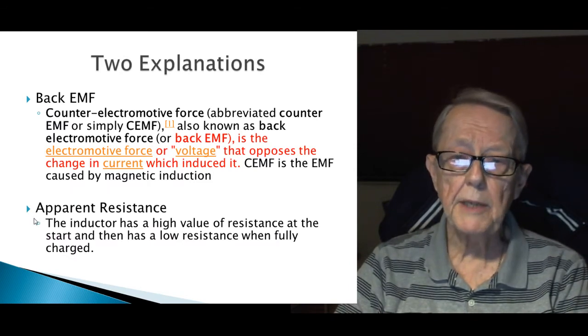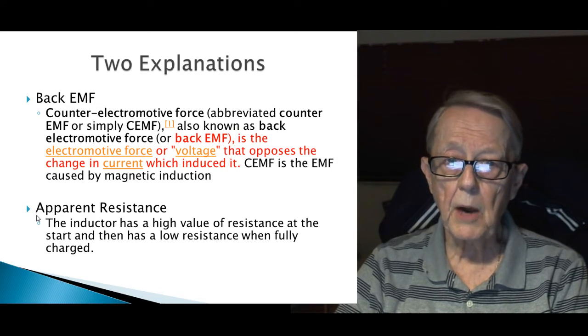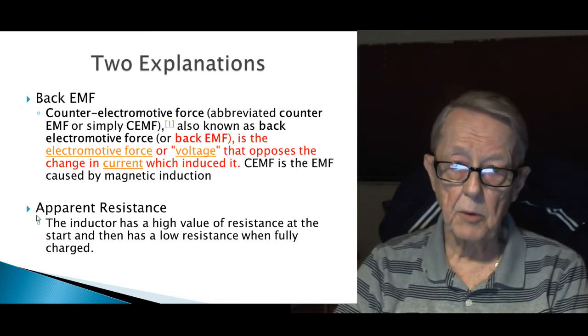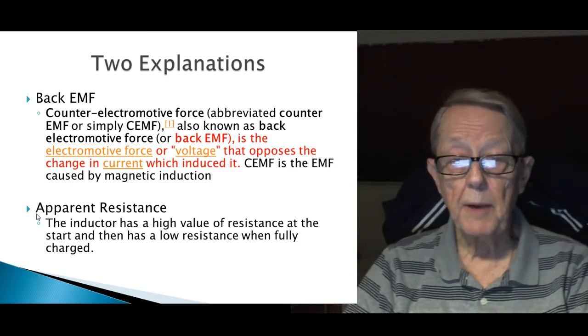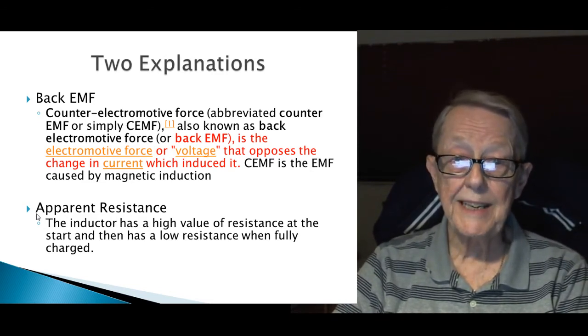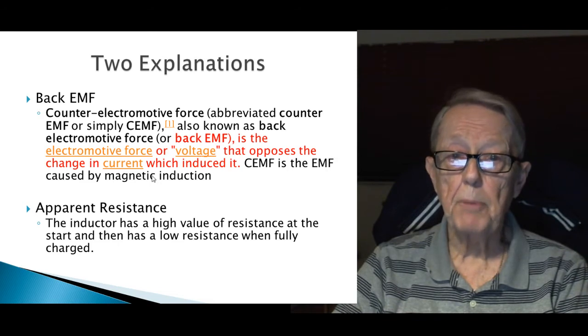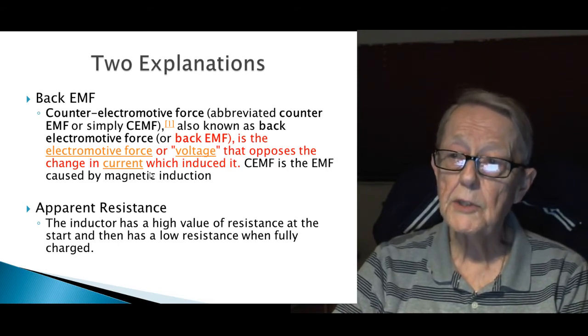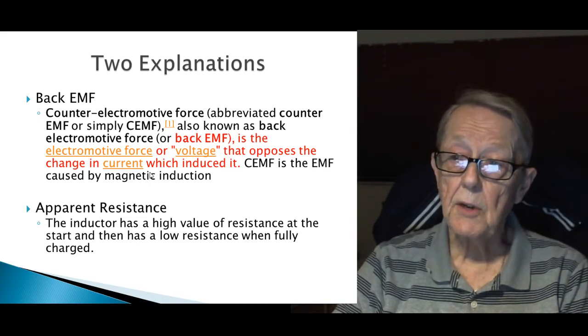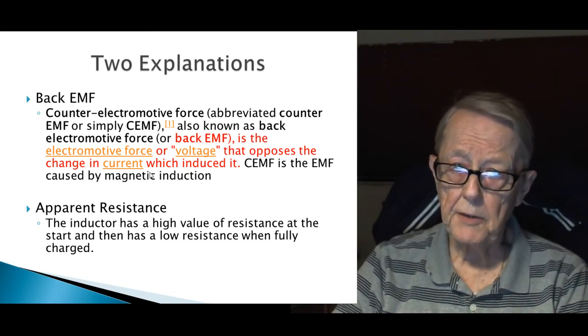Well, there are two explanations as to why this whole process works, and the main one is the back EMF, or counter-electromotive force, abbreviated CEMF, also known as back electromotive force, or back EMF. And as you know, I'm not a proponent of EMF because nobody tells me what the electromotive force is. But in this case, the back EMF is the force or voltage that opposes the change in current. So they're saying this is what causes the current to move up slowly. And yet at the same time, they tell you it's controlled by the value of the inductance and the resistor. Now here it must be the inductor and this back EMF.